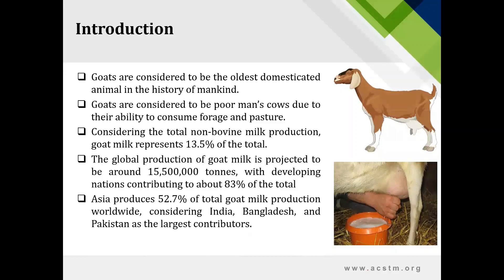Goats are considered to be the oldest domesticated animal, dating their origin to approximately 10,000 years ago. Due to the goat's ability to consume pasture and forage, they are commonly called the poor man's cow in many countries. Goat milk accounts for 13.5% of total global non-bovine milk production. The global total production of goat milk is approximately 15.5 million tons, with major contribution of developing countries at 83% of the total.